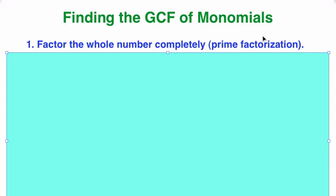Hello. In this video, we're going to find the GCF, or the greatest common factor, of monomials. The first thing we're going to do is factor the whole number completely using prime factorization. It's really important that you factor things all the way down, especially when comparing several monomials.